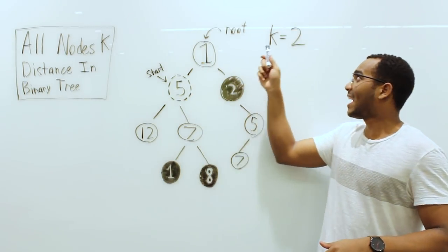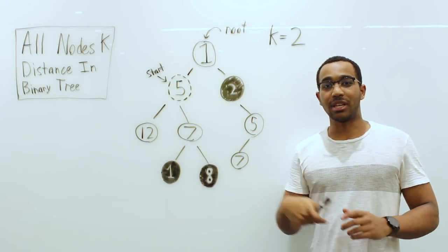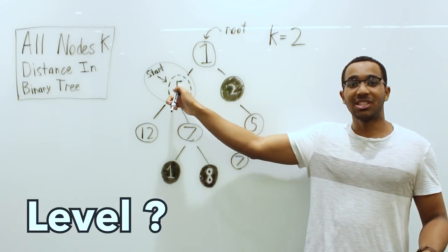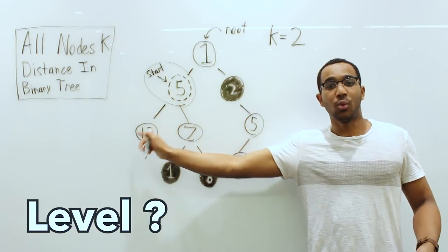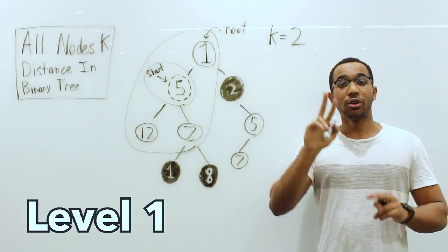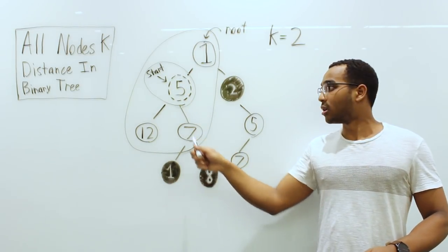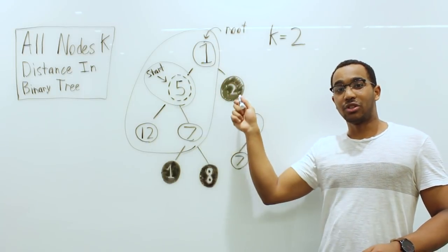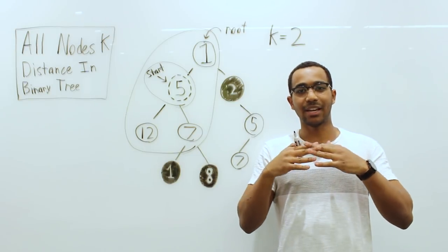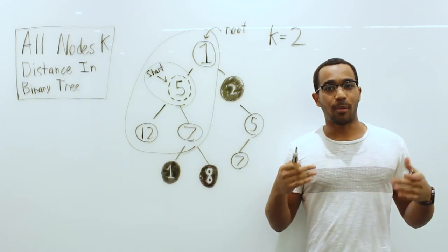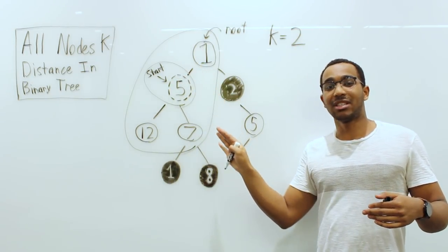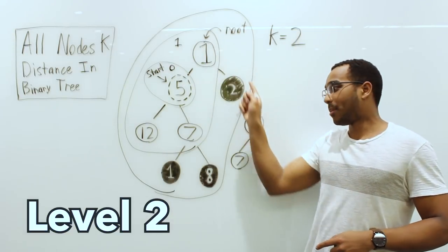Here is the start node and our K is a value of 2. This level right here is level 0 — just the start node. Level 1 is one step out in each direction. So what is level 1? What you see right now is level 1. We need to go two steps out from the start. Notice how I'm going back upwards and then down — this seems kind of odd for a binary tree. We just did layer 0, layer 1, and this is layer 2.